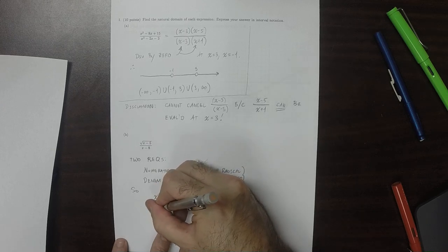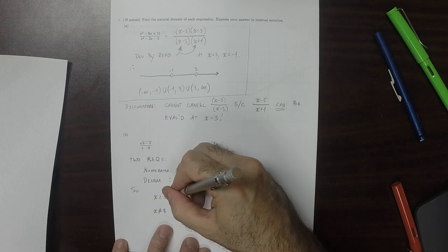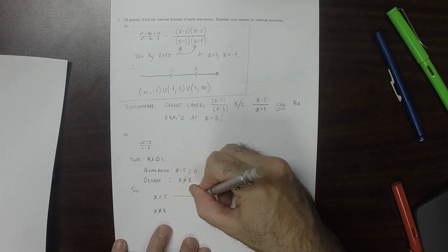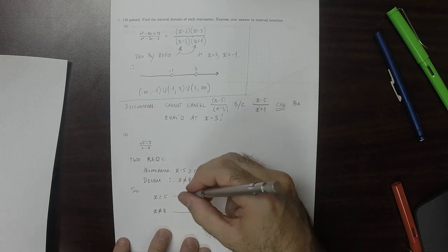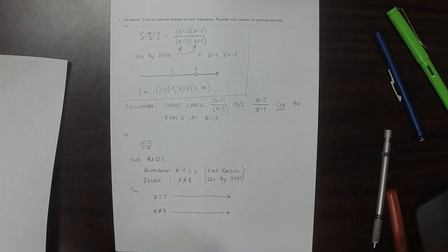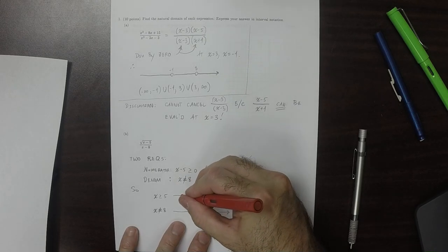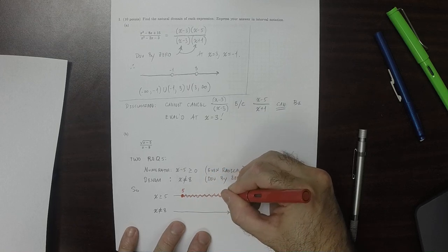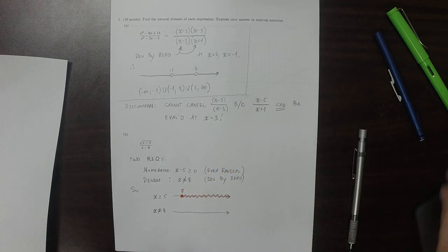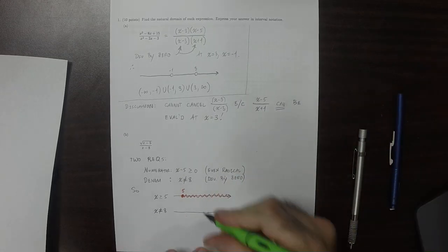So the first one is saying that x has to be greater than or equal to 5. And the second one is saying that x is anything but 8. So if we plot both of these, then x greater than or equal to 5 is saying that 5 is okay and so is anything more than 5. And x not equal to 8 is saying that we're just going to take 8 and delete it.